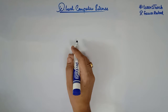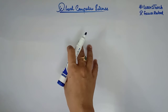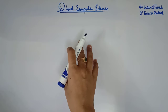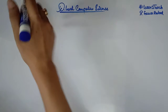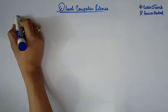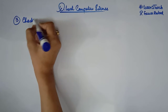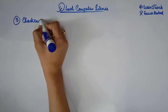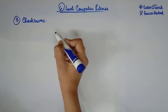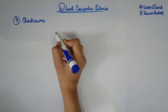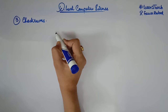Hello everyone, this is Farwa Batool and welcome to the course of O-level computer science. We were looking at methods of error detection and correction, and in this video I am going to discuss another method: checksums. Checksums is basically an error detection and correction method that is used in data transmission.